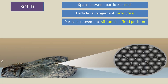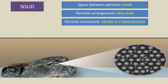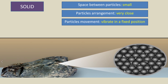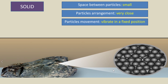Let's look at the arrangement and movement of particles in solid. The particles of solid are arranged in a regular pattern. The spaces between the solid particles are small and they are arranged very close together. In terms of movement, the particles of solids vibrate in a fixed position.